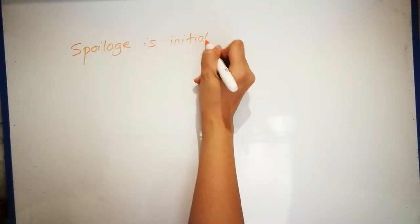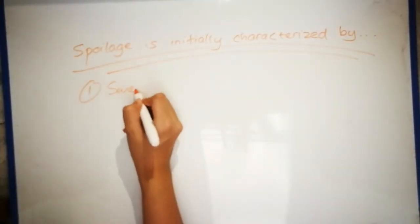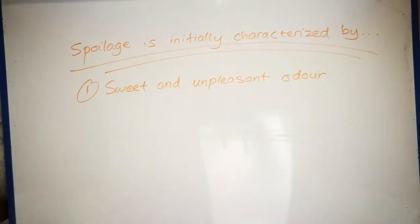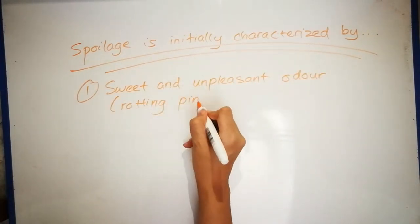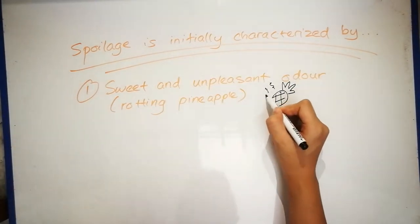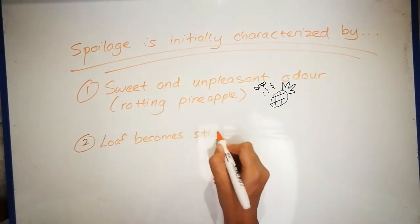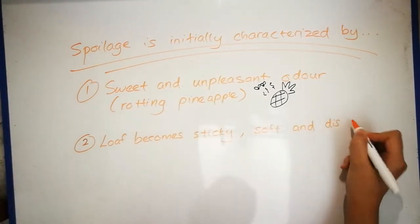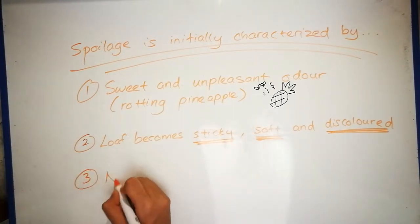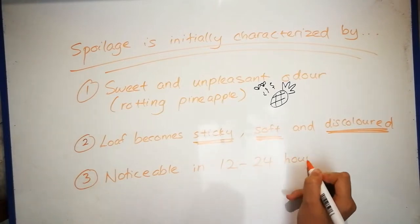Initially, this spoilage is characterized by a distinctive sweet and unpleasant odor similar to that of a rotting pineapple. Later, the loaf becomes sticky to touch, soft and discolored. The spoilage can first become noticeable in 12 to 24 hours.